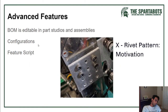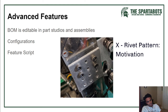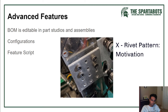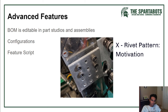Some advanced features: Onshape automatically generates a bill of materials which you can edit in part studios and assemblies, making it much easier to generate a parts list. You can also make parts configurable — for example, if you have the same type of part but want different lengths, you can create a configuration with a configurable variable that changes between versions, all within the same part studio.